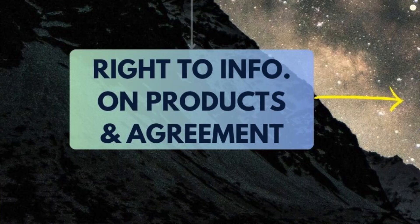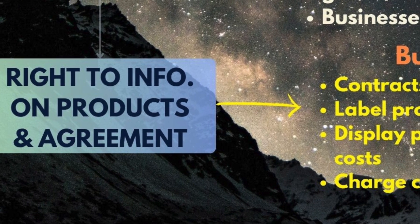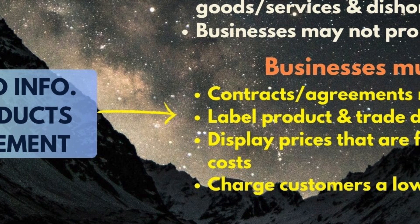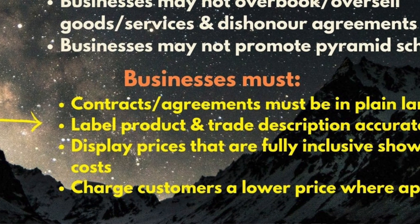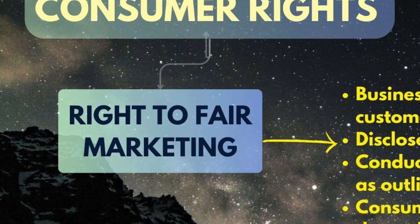The fourth right is the right to information about the product and the agreement. If you are going to buy any product, it is your right to get every piece of information about that particular product. For example, before buying a house, it is your right to be told about any defects — leakages or past issues. They need to disclose every piece of information about the product you are buying.